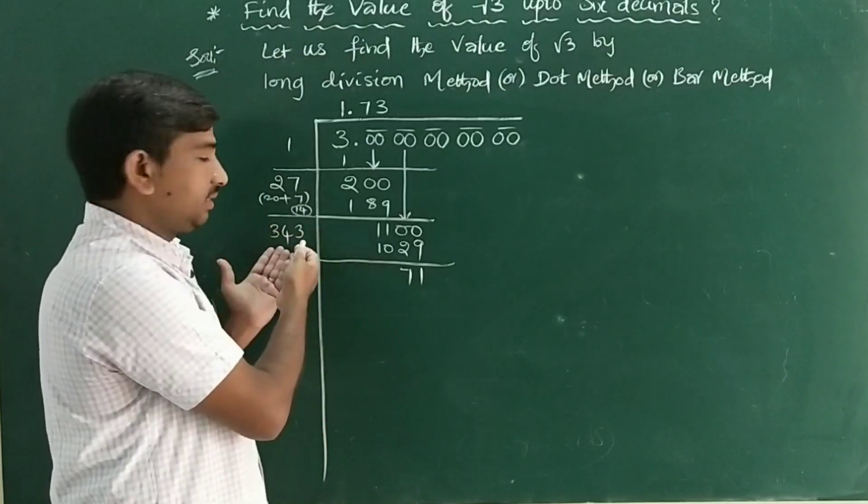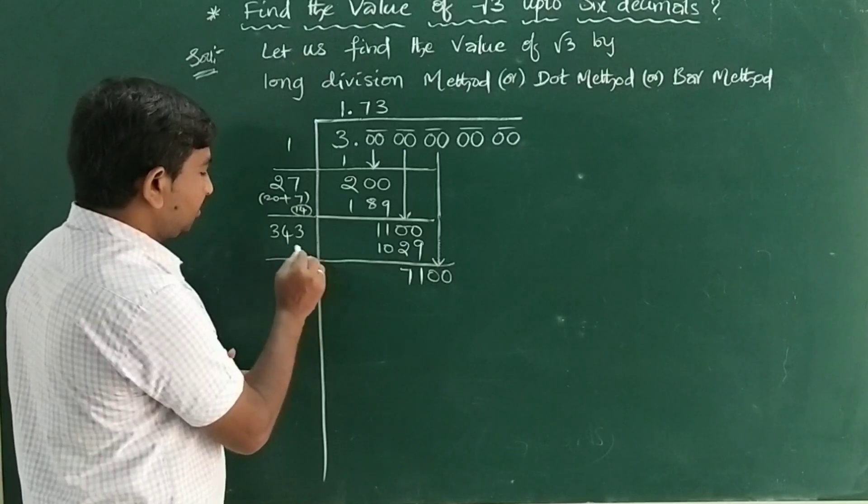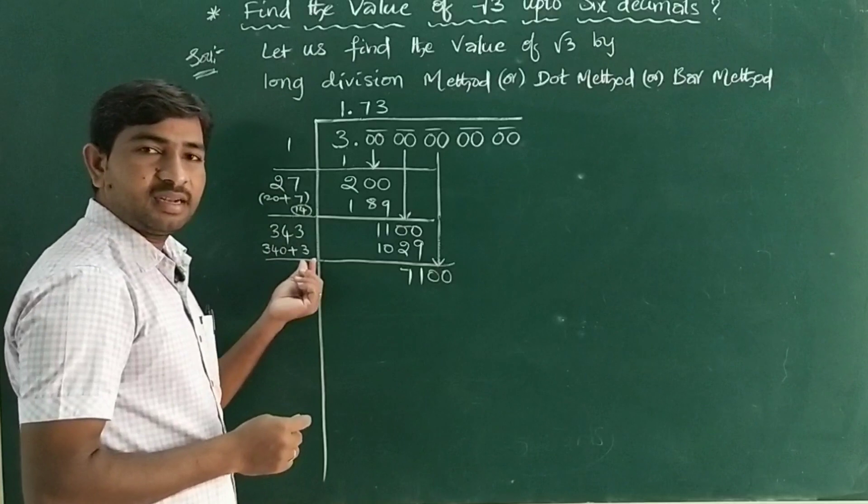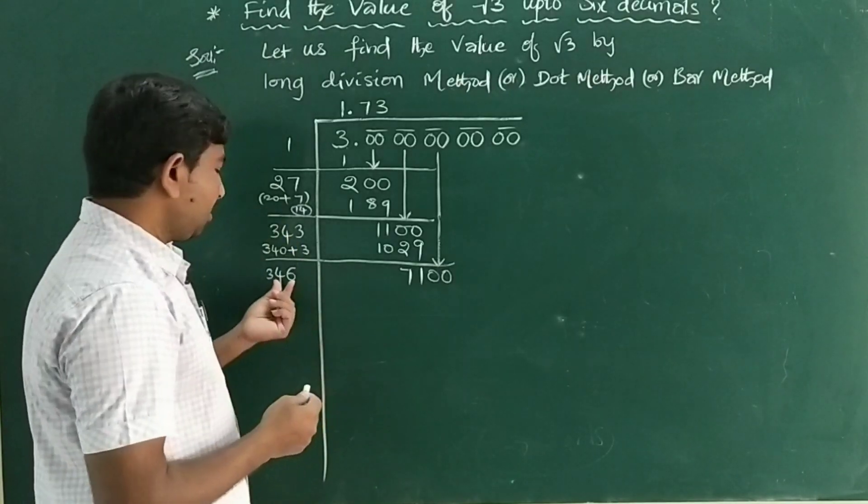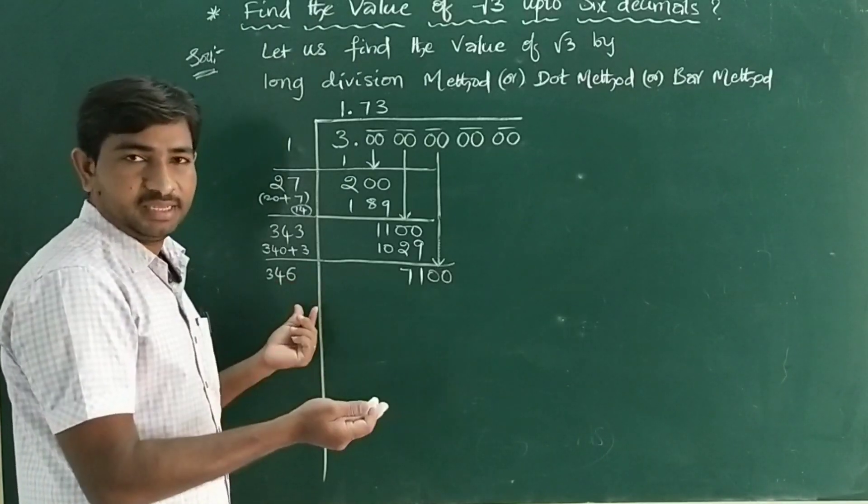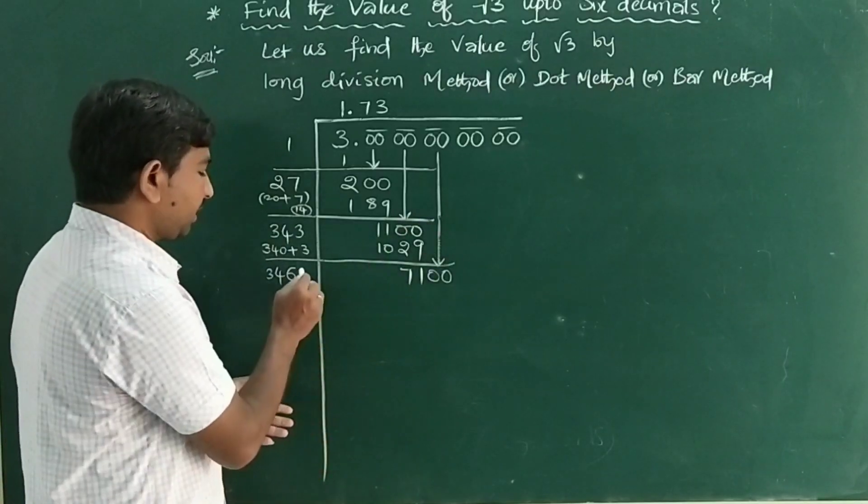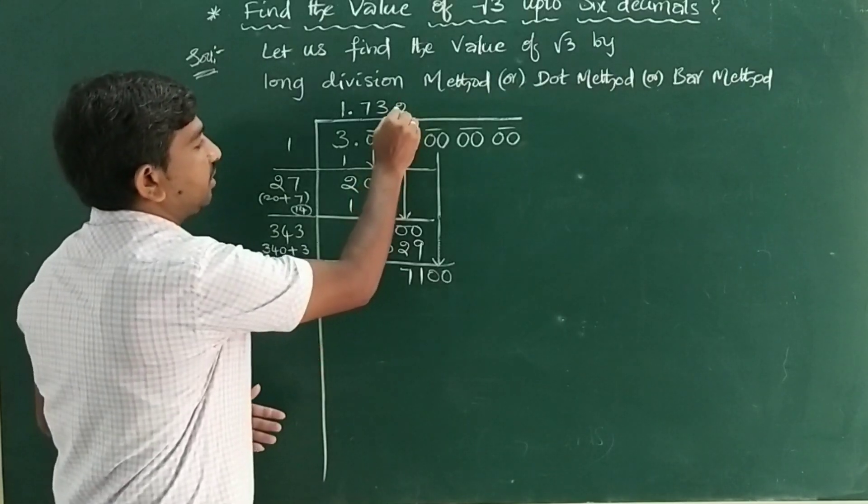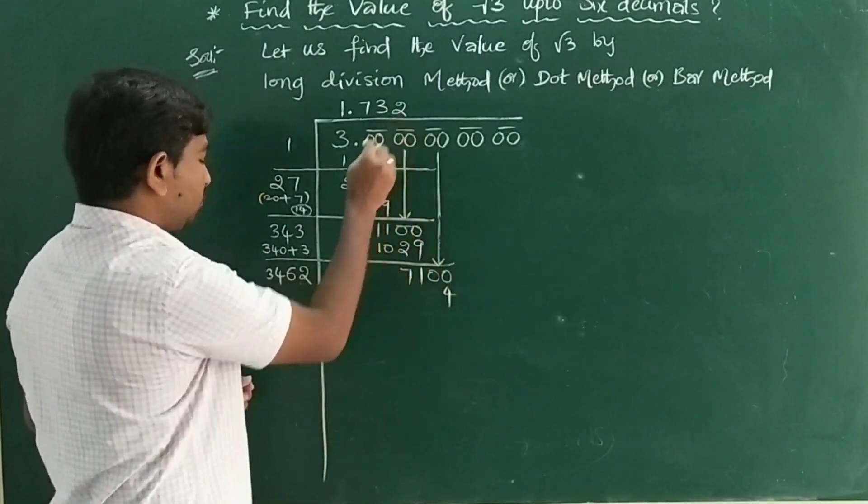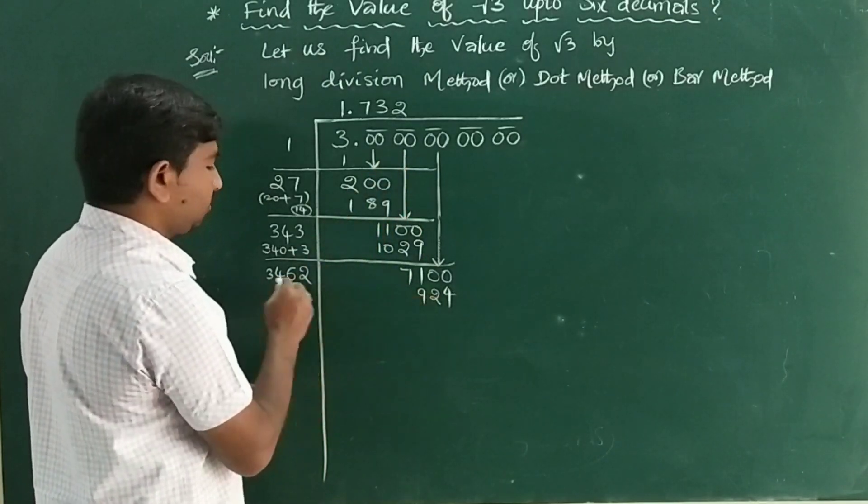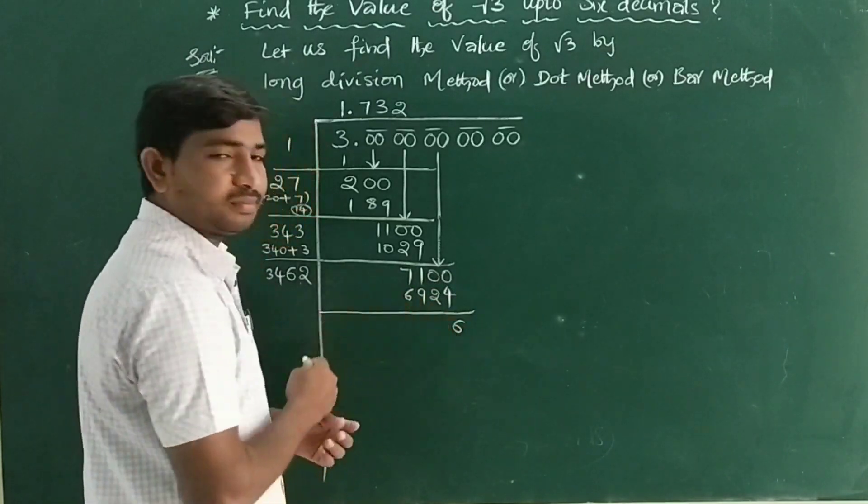71 is also very less than 343, so bring down one more pair of zeros. It becomes 7100. Again, 3 doubled (340 plus 3) becomes 6, so we have 346. If you write any number beside 6, it becomes 3460-something. 3460×2 is nearest to 7000. 3462×2: observe carefully.